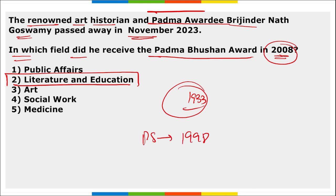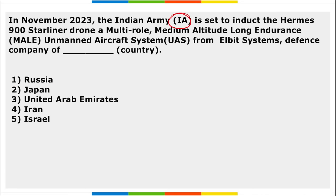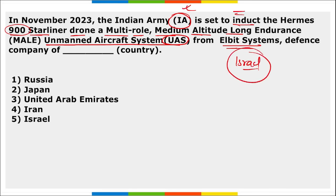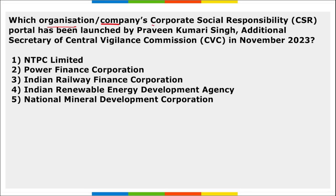Indian Army is set to induct the Hermes 900 Starliner drone — a multi-role Medium Altitude Long Endurance (MALE) Unmanned Aircraft System — from Elbit Systems Defense Company of Israel. IREDA's — Indian Renewable Energy Development Agency's — Corporate Social Responsibility portal was launched by Praveen Kumari Singh, Additional Secretary of CVC.